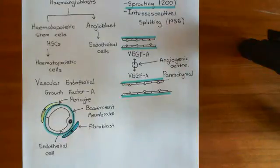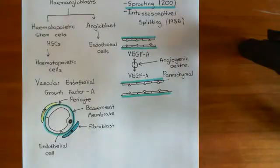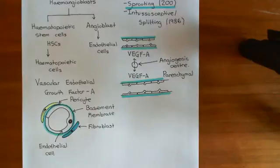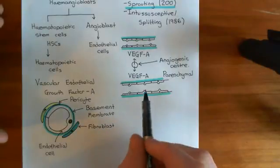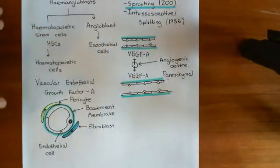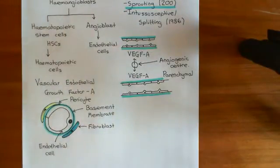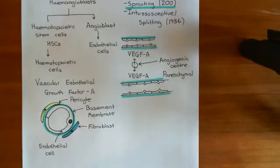Welcome to this next video in which we are discussing angiogenesis. We're in the process of discussing sprouting angiogenesis. At the moment we've got this angiogenic centre which is secreting this proangiogenic molecule, and the most famous proangiogenic molecule is vascular endothelial growth factor A. What we want to see is how this is going to affect these two capillaries. Basically what's going to happen is they're going to produce sprouts that will migrate towards the source of vascular endothelial growth factor A, and then when the two sprouts arrive at the angiogenic centre, they will fuse together to make one continuous blood vessel.